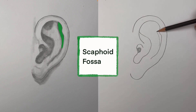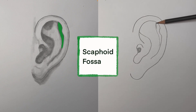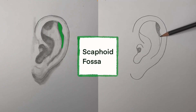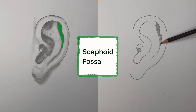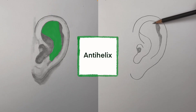Let's move to this section here. This is a scaphoid fossa. Scaph is Greek for boat. Oid means resembling, so resembling a boat, and a fossa is a ditch or depression. In other words, the scaphoid fossa is a ditch resembling a boat. This area, the scaphoid fossa, separates the helix on the outside from the anti-helix on the inside.